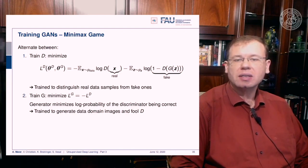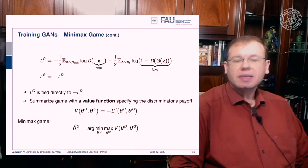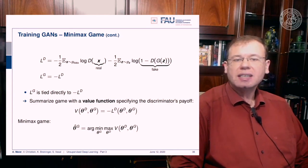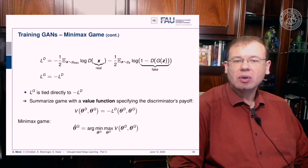The generator minimizes the log probability of the discriminator being correct — it is trained to generate domain images to fool D. Optionally, you can run k steps of one player for every step of the other, and the equilibrium is a saddle point of the discriminator loss. The game can be summarized with a value function V specifying the discriminator's payoff, which is the negative loss of the discriminator, resulting in a min-max game. The optimal parameters of the generator are found by maximizing V with respect to the discriminator, nested into a minimization of G's parameters with respect to the same value function.